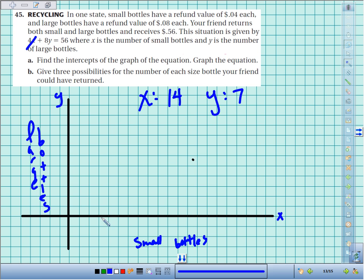Okay, our x-intercept was 14. So I've got enough space here. I can go by 1. There's 1, 2, 3, 4, 5, 6, 7, 8, 9, 10, 11, 12, 13, 14. Okay.